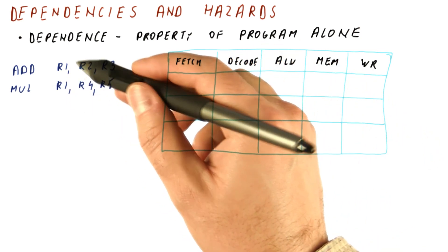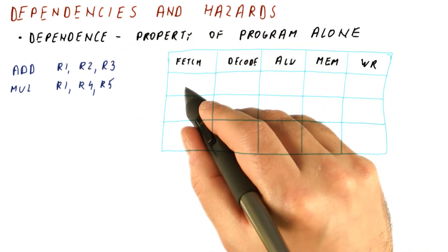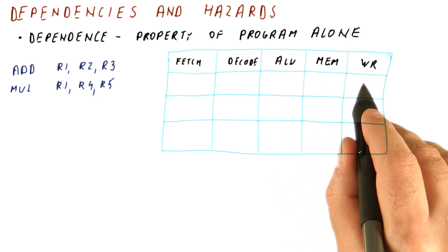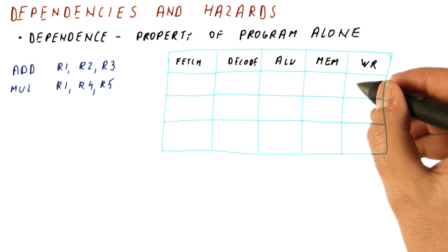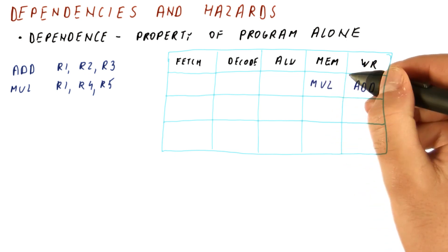The add will move through this pipeline until the write stage, and that is when it will update R1. So let's look at the cycle while the add is here and the multiply is following behind it.